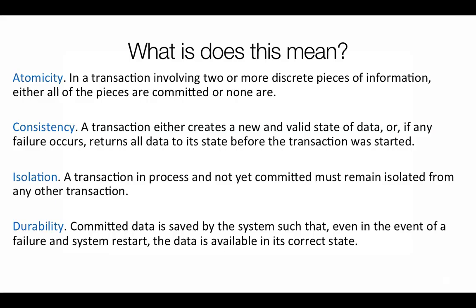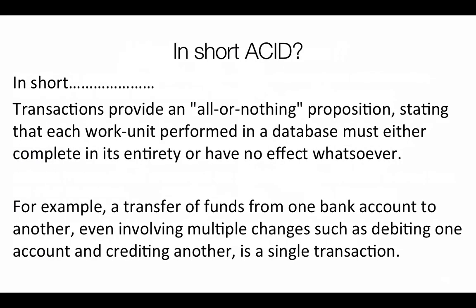Here's a more detailed definition of what we just saw. Atomicity is a transaction involving two or more discrete pieces of information where either all of the pieces are committed or none are. We'll see that in a few minutes with our code. Stated again, this is a transaction that is all or nothing. Each unit of work must be performed in a database completely in its entirety or have no effect whatsoever.